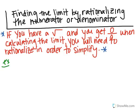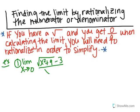Here's the example: the limit as x approaches 0 of the square root of x squared plus 9, minus 3, all over x squared. If you try to plug in 0, you end up getting 0 over 0. Whenever you get a square root, you're going to need to rationalize. Since the root is in the numerator, you're going to rationalize the numerator.